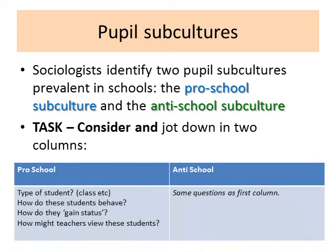Sociologists have identified two pupil subcultures prevalent in schools: the pro-school subculture and the anti-school subculture. You may want to pause the video now and consider what constitutes each subculture — what type of student would fit in each, how these students behave, how they gain status within that subculture, and how teachers might view them. Give yourself about five minutes before continuing.